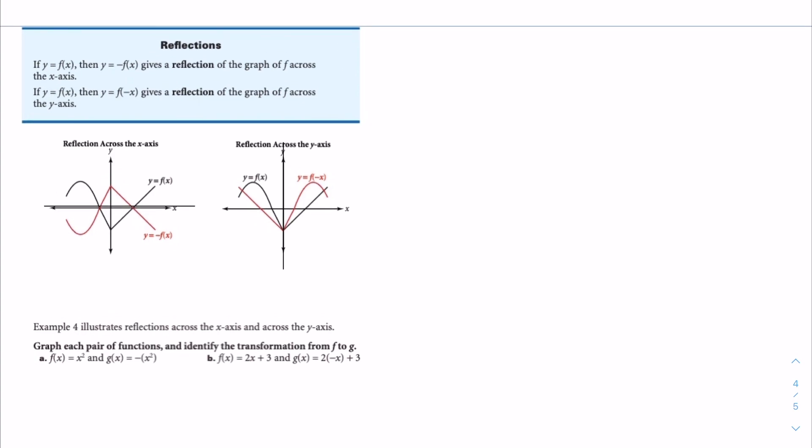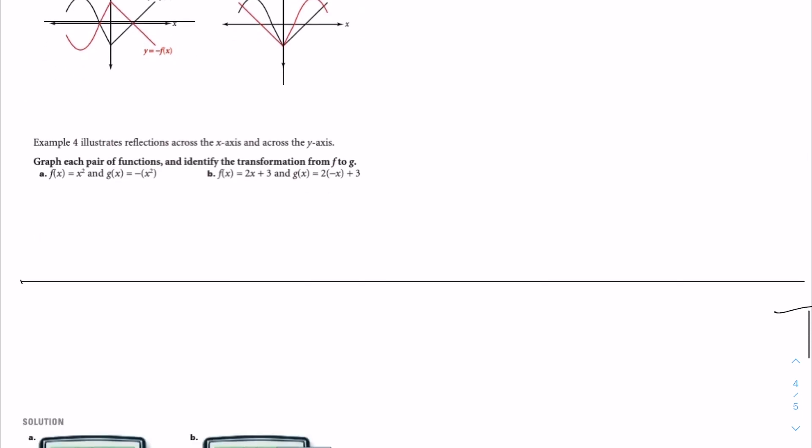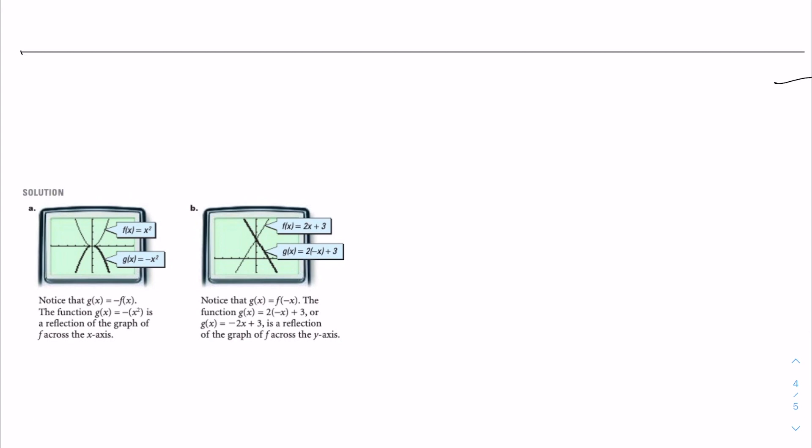For the example, graph each pair of functions and identify the transformation from f to g — do that on the calculator. When you put it into the calculator, you can see that g of x is equal to negative f of x, and the function g of x is equal to negative x squared, which is the reflection of the graph of f across the x-axis.